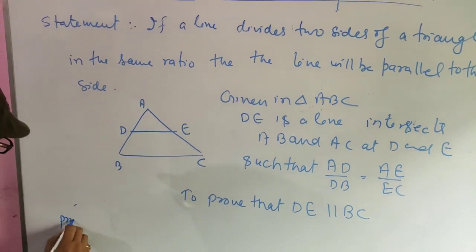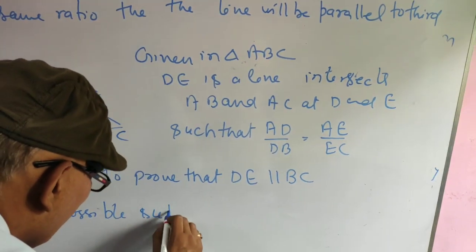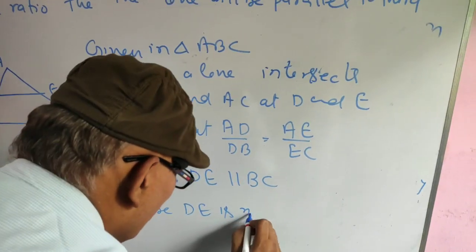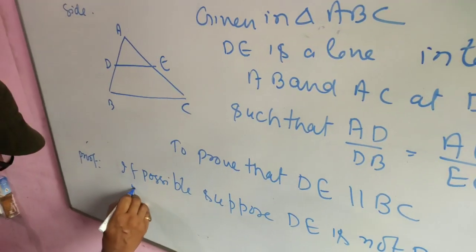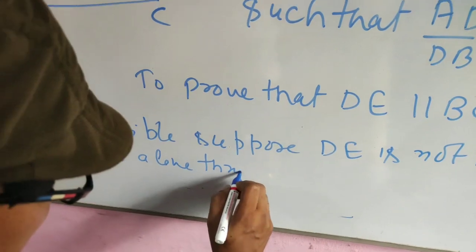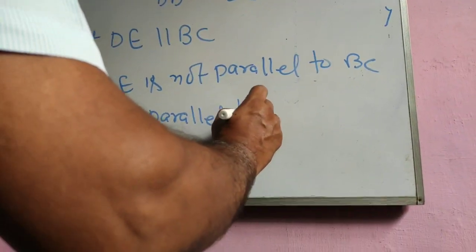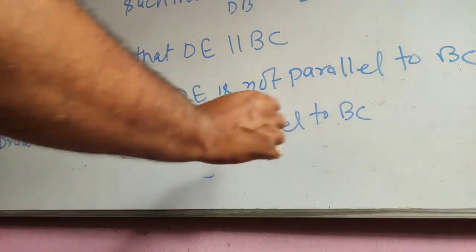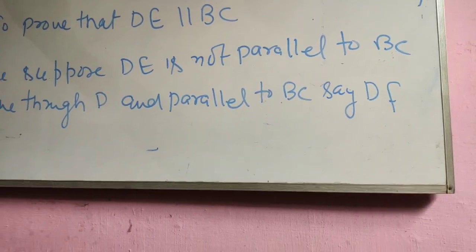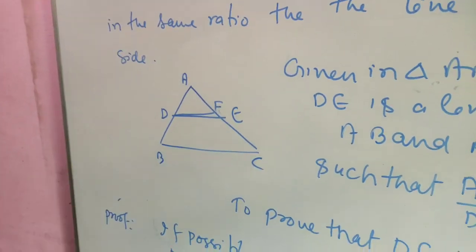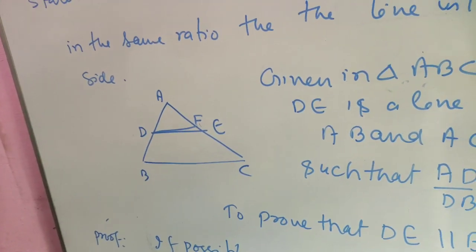Proof: If possible, suppose DE is not parallel to BC. So draw a line through D and parallel to BC — say DF.